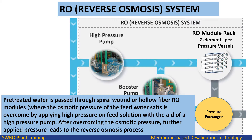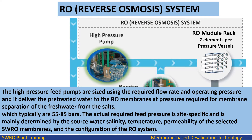Pre-treated water is passed through spiral wound or hollow fiber RO modules, where the osmotic pressure of the feed water salts is overcome by applying high pressure on the feed solution with the aid of a high pressure pump. After overcoming the osmotic pressure, further applied pressure leads to the reverse osmosis process. The high pressure feed pumps are sized using the required flow rate and operating pressure, and deliver the pre-treated water to the RO membranes at pressures required for membrane separation of fresh water from the salts.